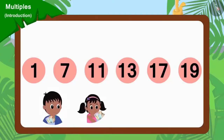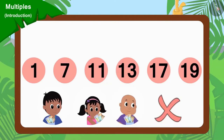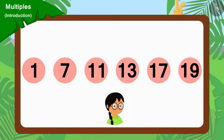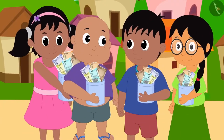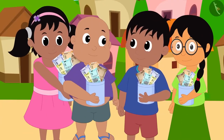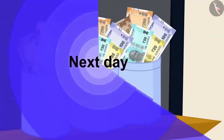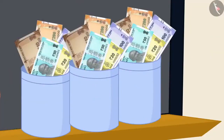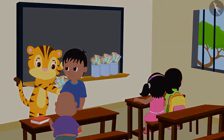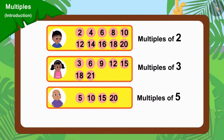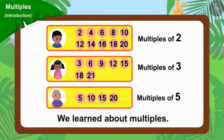As none of Raju, Pinky and Bablu were able to go to these houses, they took Meenu's help and asked her to collect donations from those houses. Raju, Pinky, Meenu and Bablu amassed a lot of donations through their hard work. The next day, they gave all the money to their teacher and got a lot of appreciation. In this video, we learned about multiples. In the next video, we will learn more through some interesting examples.